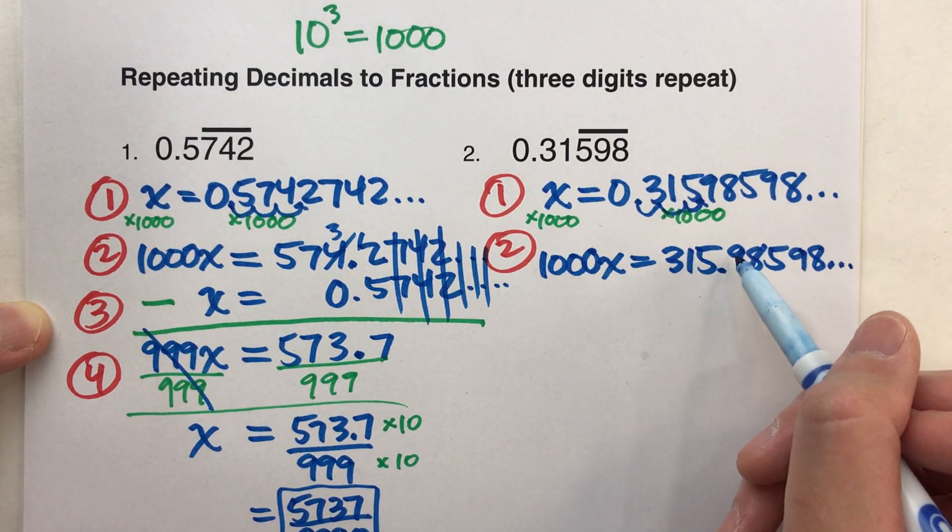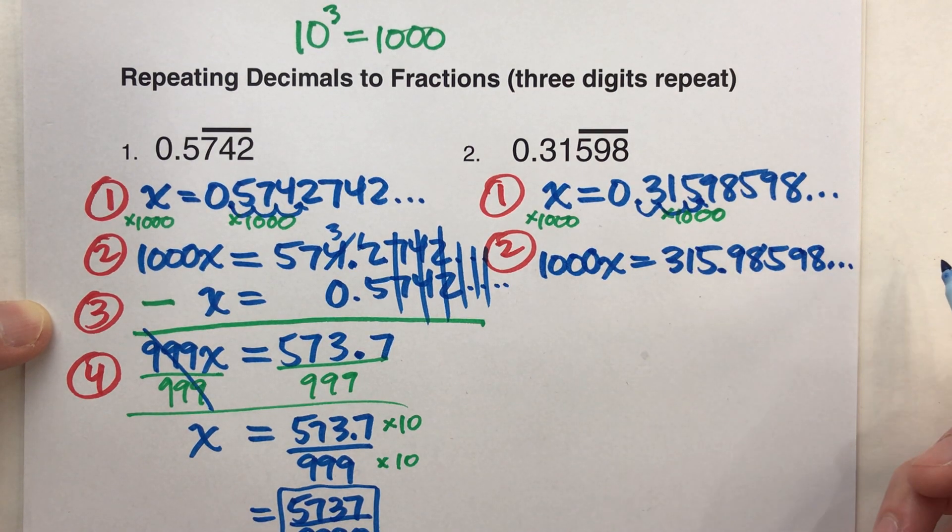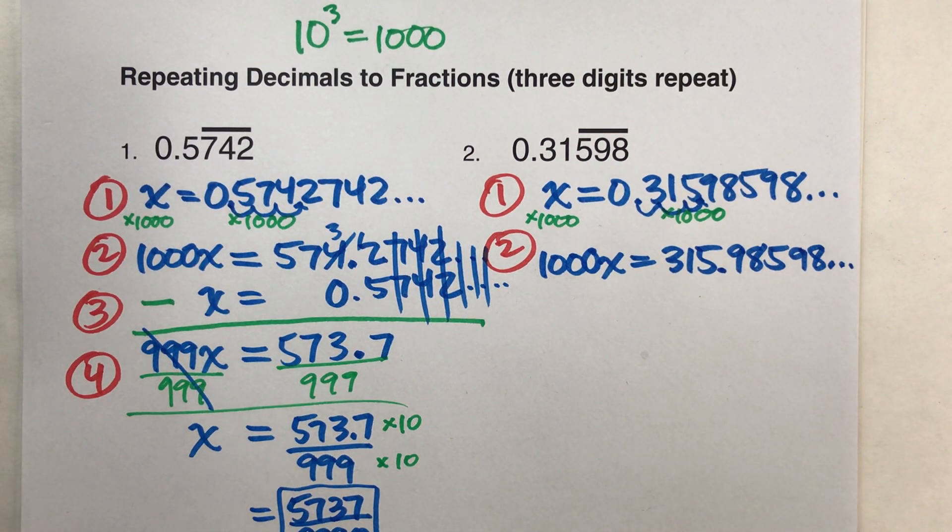And if you look really carefully, there's our repeating digits, 5, 9, 8, 5, 9, 8, and it'll just keep going.